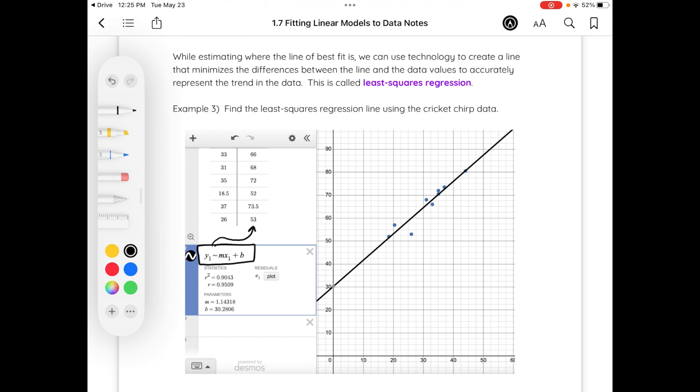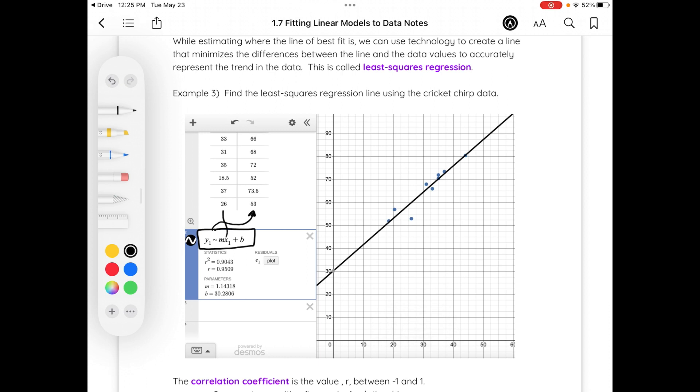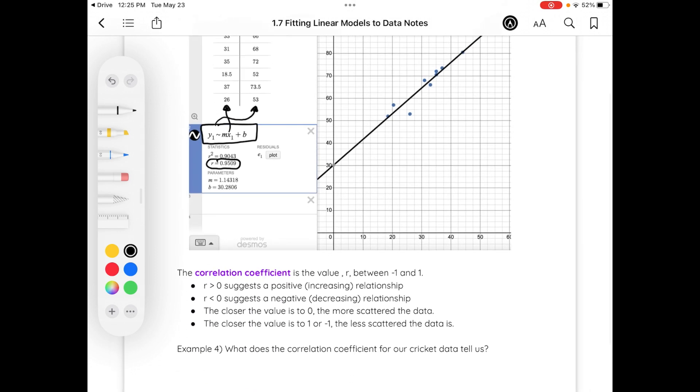Y sub 1 means that it's going to pull the y values from my table. So I didn't say equals. I used about, M times our x1 value so it knows where to pull the data from plus B. We specifically want to look at the r equals. Notice this number is very close to 1, just slightly under. So this number tells us something. If r is greater than 0, which it is, it suggests a positive increasing relationship. If it is less than 0, it suggests a negative decreasing relationship. The closer the value to 0, the more scattered our data is.